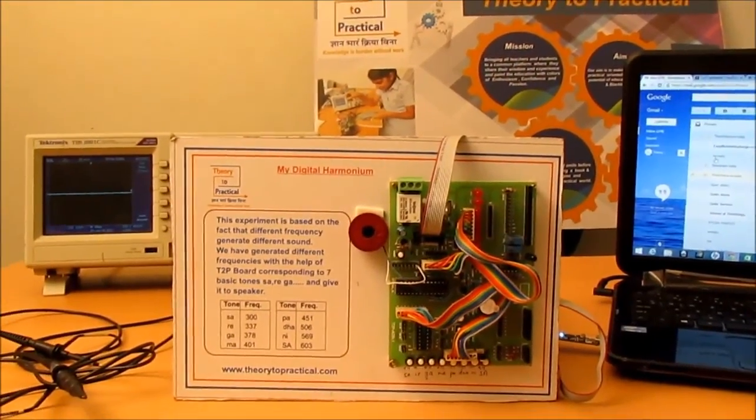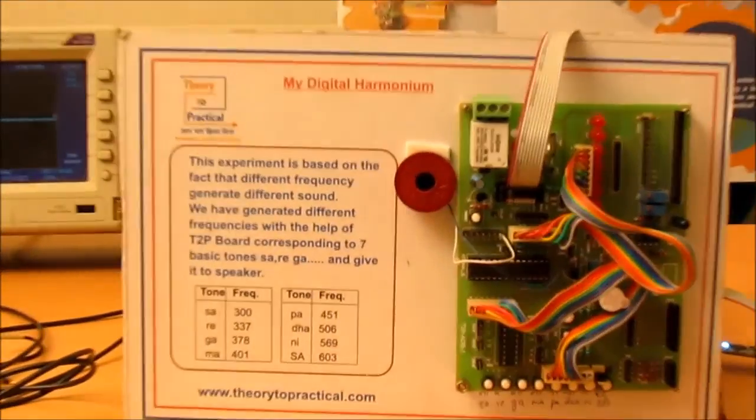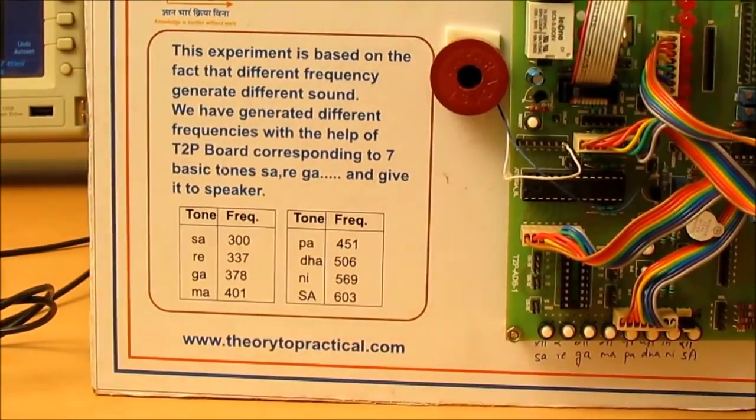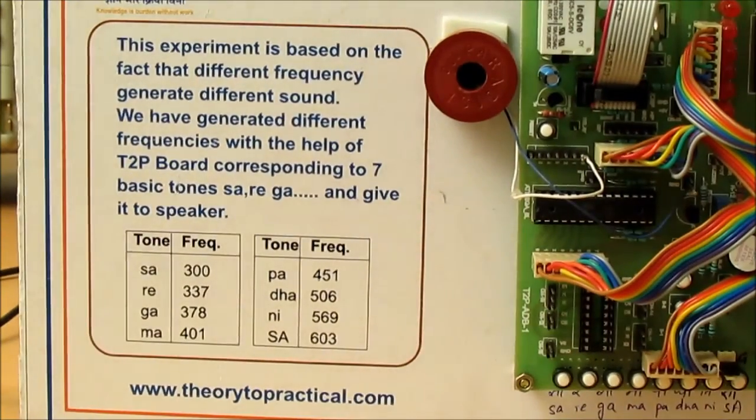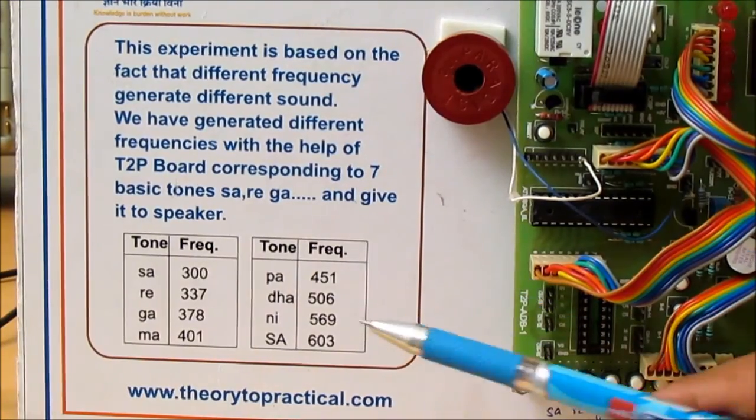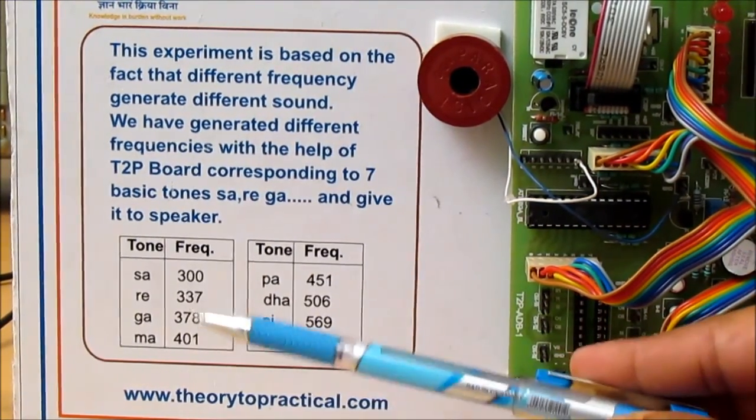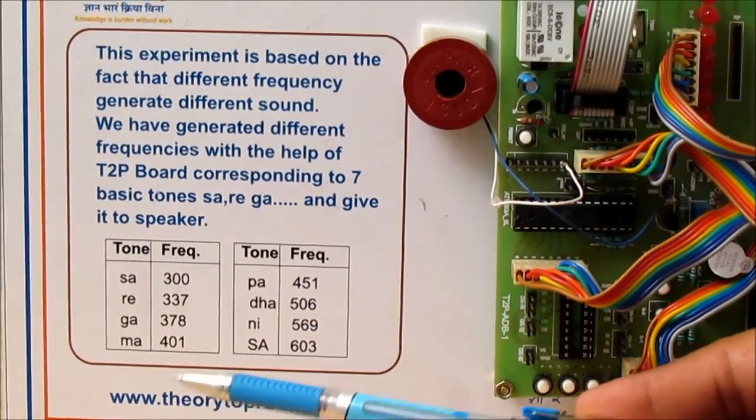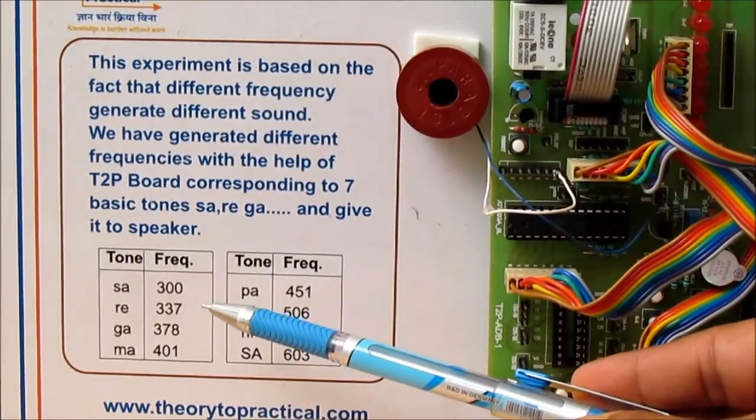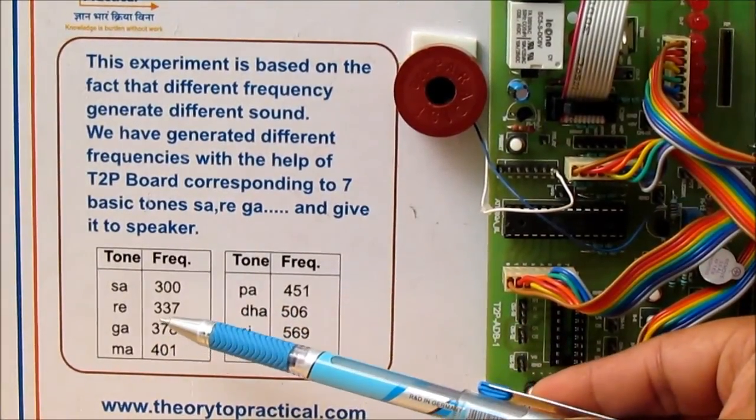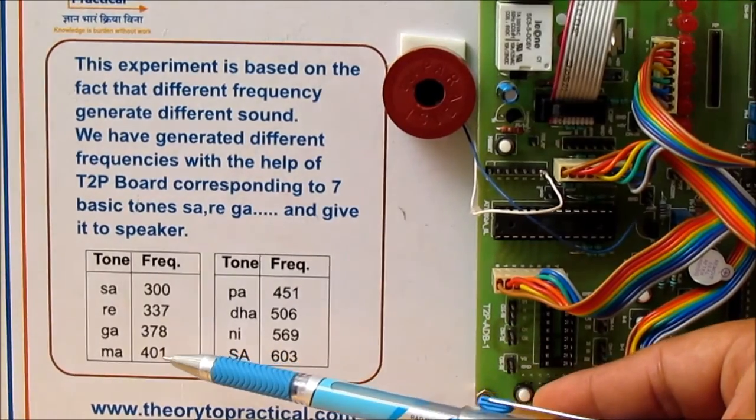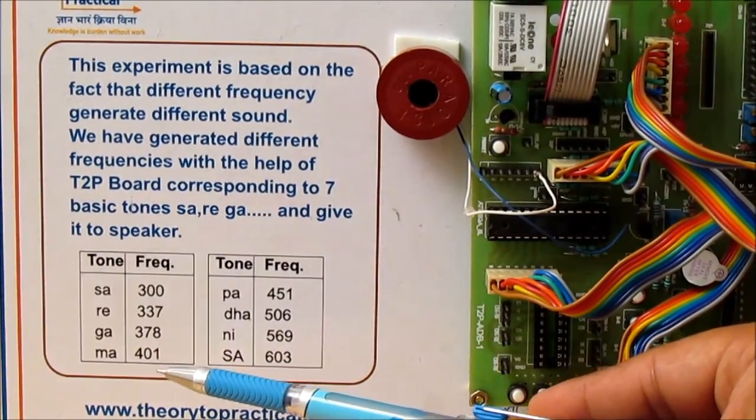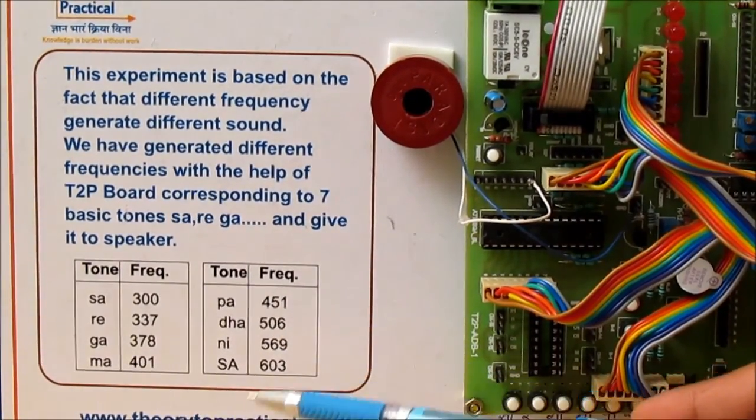In our Indian music we have total seven tones: sa, re, ga, ma, pa, dha, ni, each corresponding to different frequencies. For example, there is a correlation between all these tones. If we have set sa as 300 hertz, then frequency of re is 337, ga is 378, ma is 401, and pa is 451.